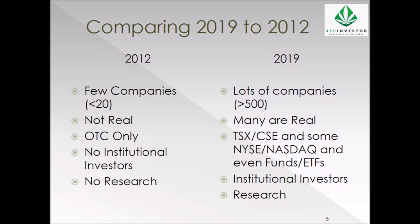The markets have really changed. Back in 2012 there weren't a lot of companies — they weren't real, they weren't really tied to the cannabis industry in any way, just pretending to be cannabis players. They all traded on the OTC. This was pre-Canada being the capital, and there were no institutional investors and literally no research — it was a wild west. Fast forward to today: there are more than 500 companies and many of them are real. The TSX, CSE, NASDAQ, and NYSE host some of these companies. There are now even mutual funds and ETFs. We've seen institutional investors enter the space, and there's a whole bunch of analysts covering it.